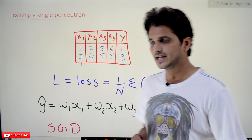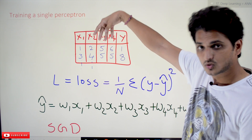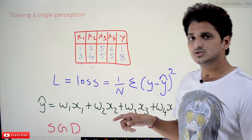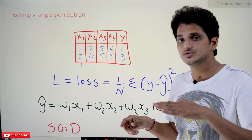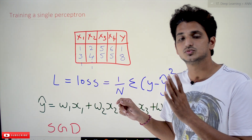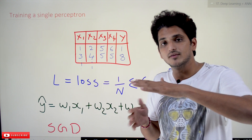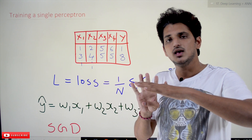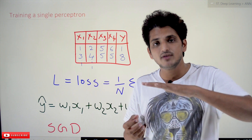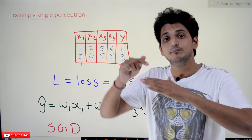Coming to today's class, let's take an example. The dataset we consider here has four input columns x1, x2, x3 and x4, and output column y. Suppose if you want to apply multiple linear regression on this dataset — we are having four input columns — so the multiple linear regression model will identify a four-dimensional hyperplane that passes through this data and has minimum loss. That plane will be identified — the plane that is having minimum loss.